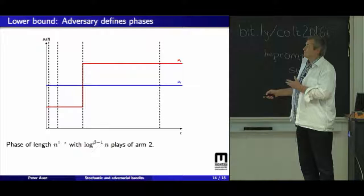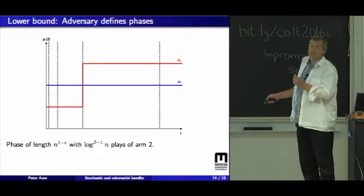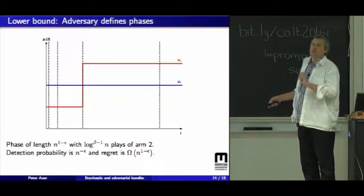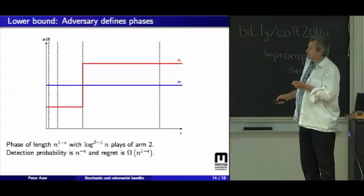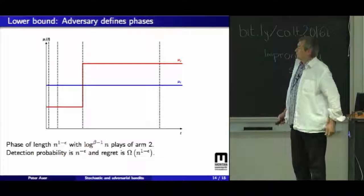This allows, and now the algorithm needs to distinguish if the arm is like this or if it's like this. But it has only that many plays, which is less than log n, and this gives a relatively large probability that the algorithm will be mistaken. So with this probability, the change is not detected and the regret is like this. So this is very rough, the lower bound argument.